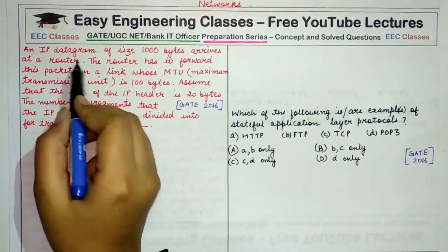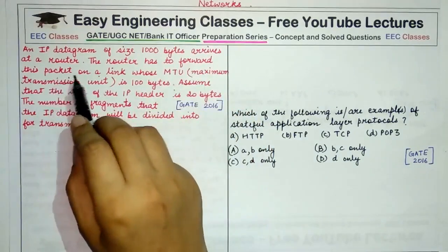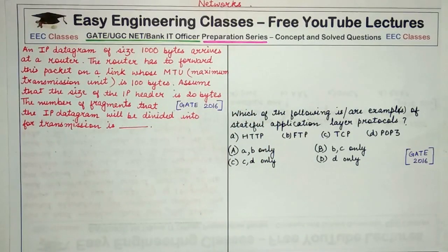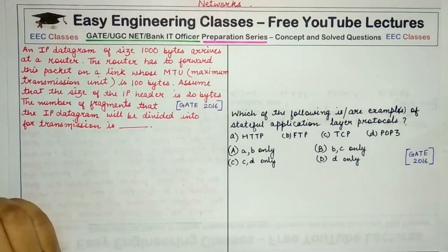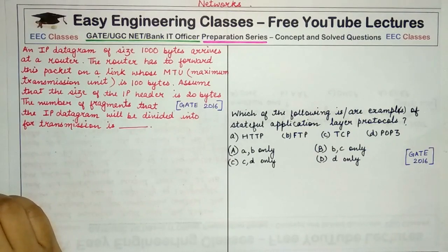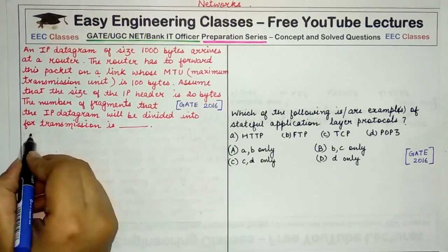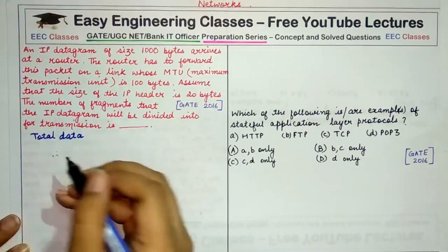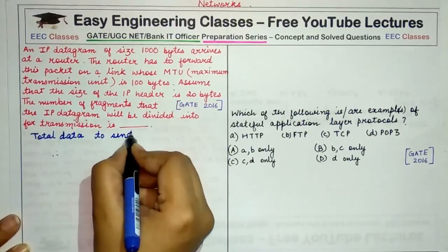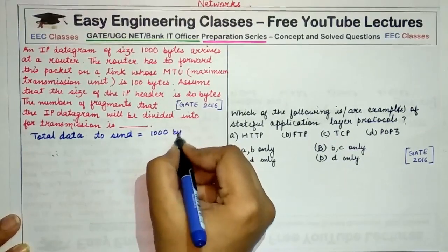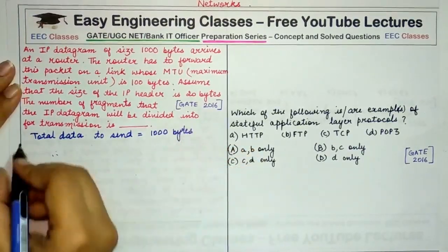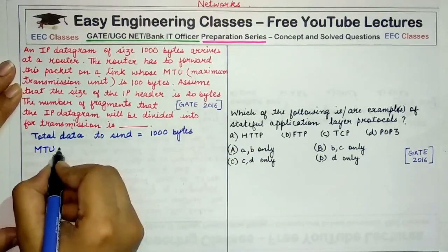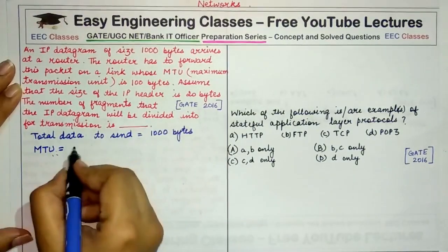The first question: an IP datagram of size 1000 bytes arrives at a router. The router has to forward this packet on a link whose maximum transmission unit (MTU) is 100 bytes. The total data to send across the network is 1000 bytes, and the maximum amount of data that can be sent at a time across the network is 100 bytes.